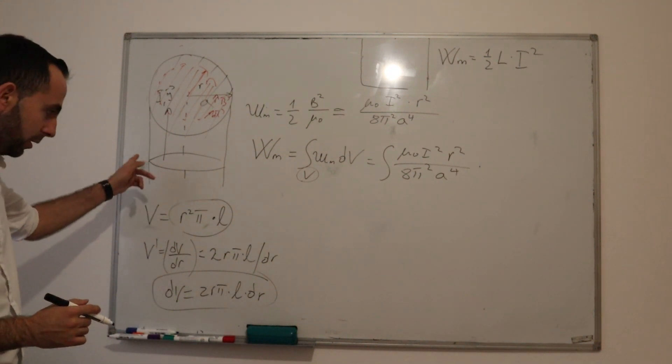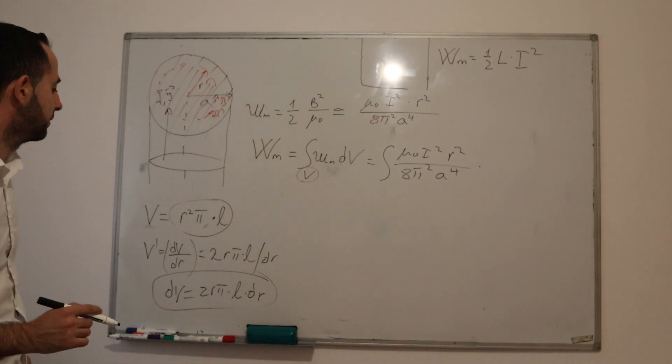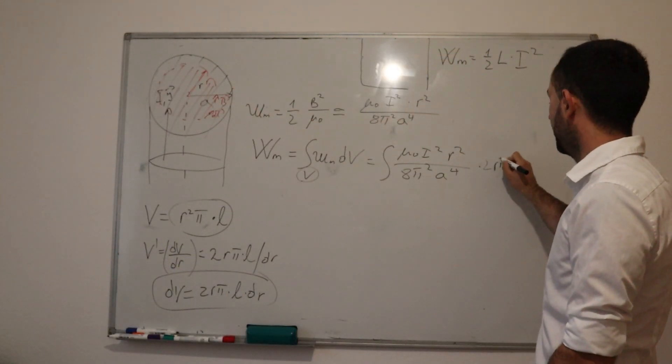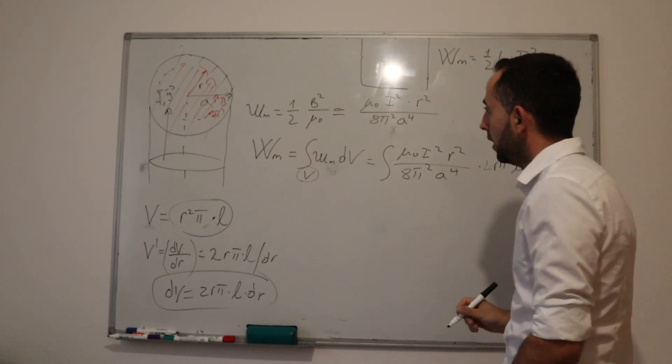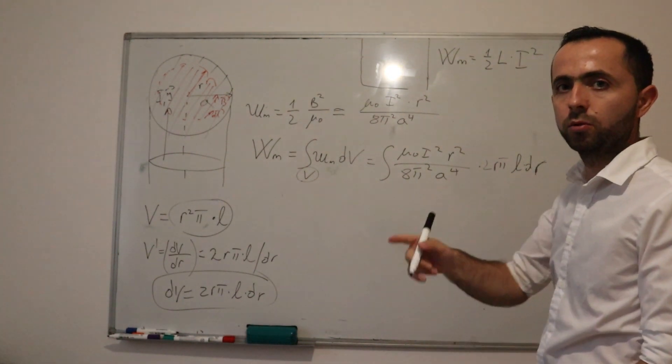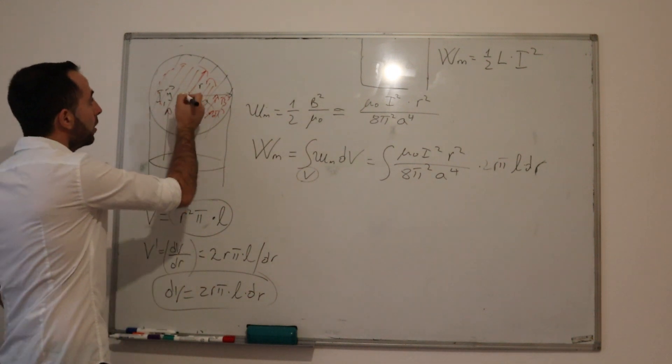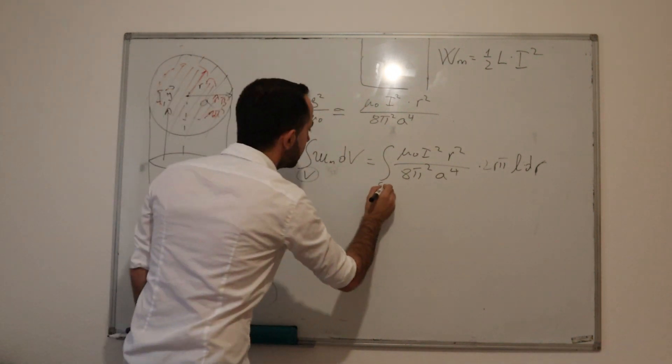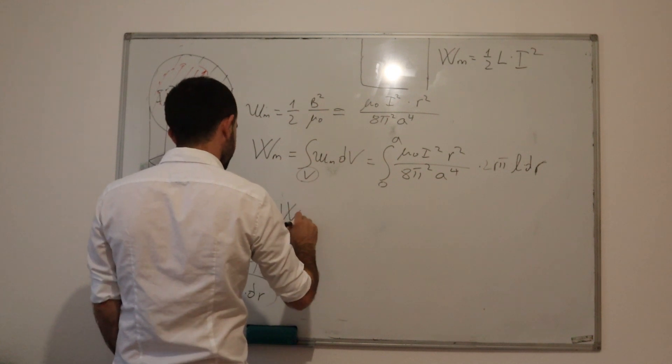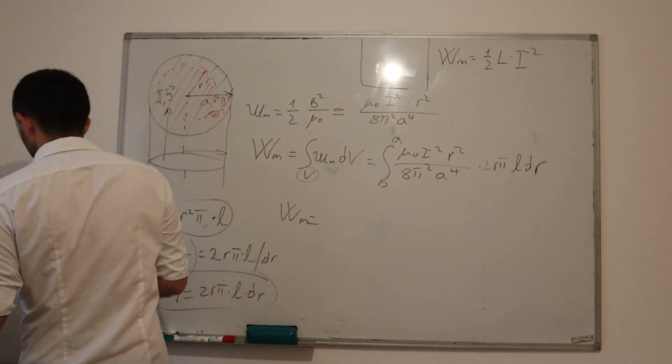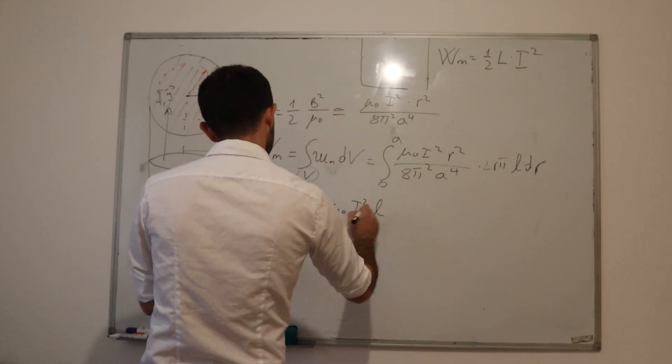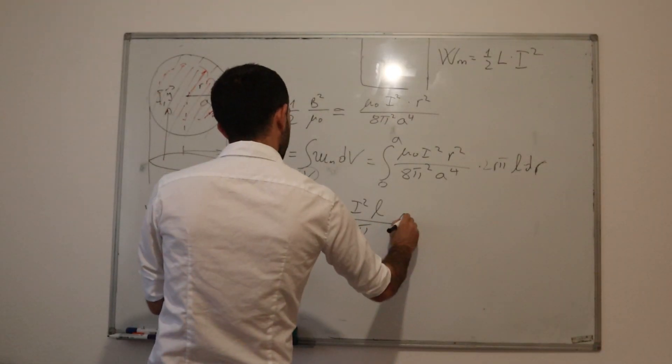You could also, with logic, determine what is dV, infinitely small part of volume. We put this here: 2πRL times dR. Because our variable is R, which is a distance, which is a radius—it starts from 0, from the center, and it ends here, which is A, the radius of our conductor. When you solve this integral, you will get μ₀I²L divided by 16π.